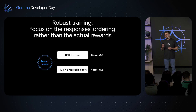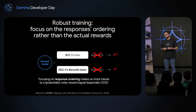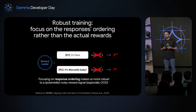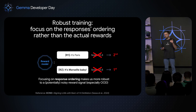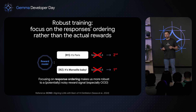One solution we propose and leverage for Gemma 3 is to not focus so much on the reward signal itself, but on the ordering statistics. What's important in RL is not the exact reward signal but the contrastive nature of what you're doing: you ask a prompt, get different answers, and want to know which is best, pushing that answer over the others. For this task, it may be more robust to use just the order — 'the first is better than the second, better than the third' — rather than the raw signal. Focusing on response ordering makes us more robust to a potentially noisy reward signal, especially when going out of distribution during a long training. There's another paper published by the team in 2024 on that subject.